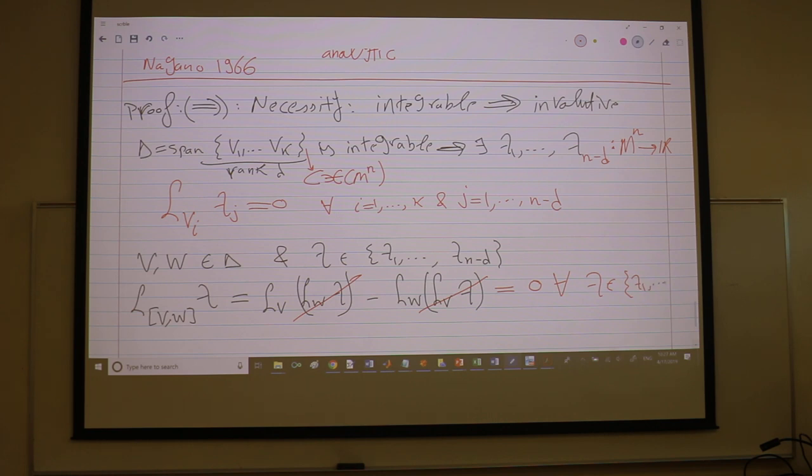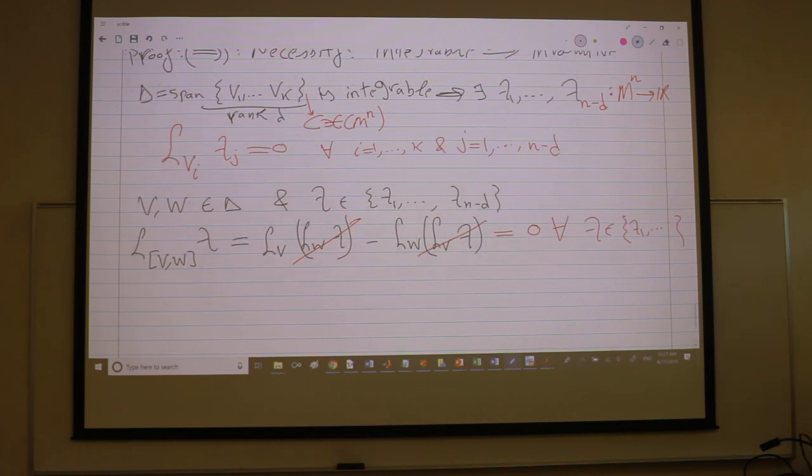So it means that the Lie bracket is really also in the tangent space, so the Lie bracket is in delta. So you start with any two vector fields in delta, you get the Lie brackets in delta, so delta is involutive.